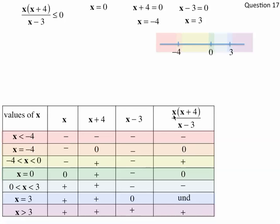Transcribing these results to our number line: when x is less than negative 4, the whole rational expression is negative. When x equals negative 4, it is 0. When x is between negative 4 and 0, it is positive. When x equals 0, the rational expression is 0. When x is between 0 and 3, the rational expression is negative. When x equals 3, the rational expression is undefined. When x is greater than 3, the rational expression is positive.